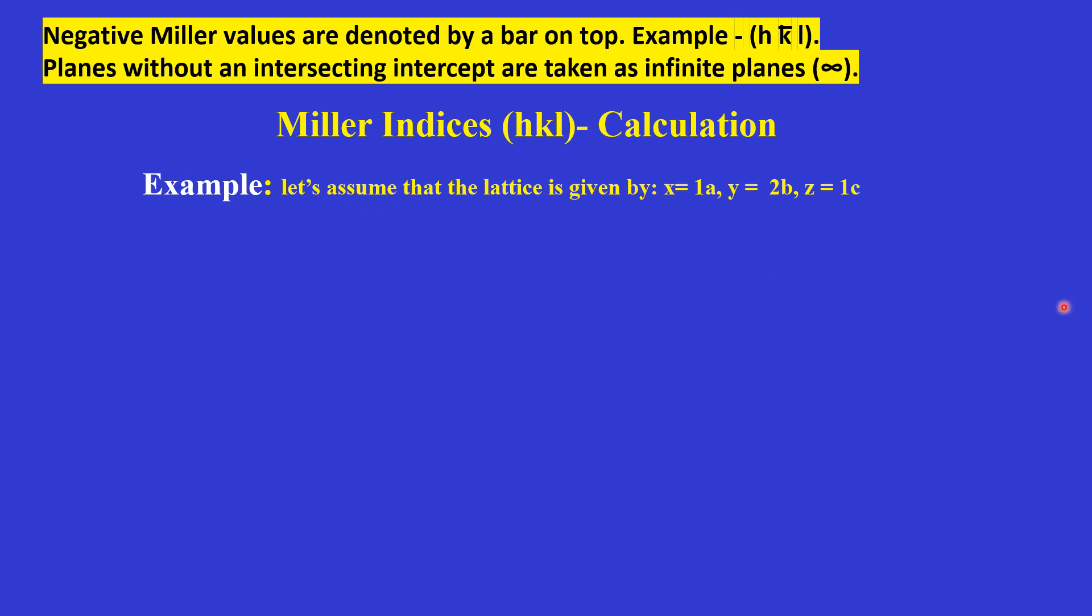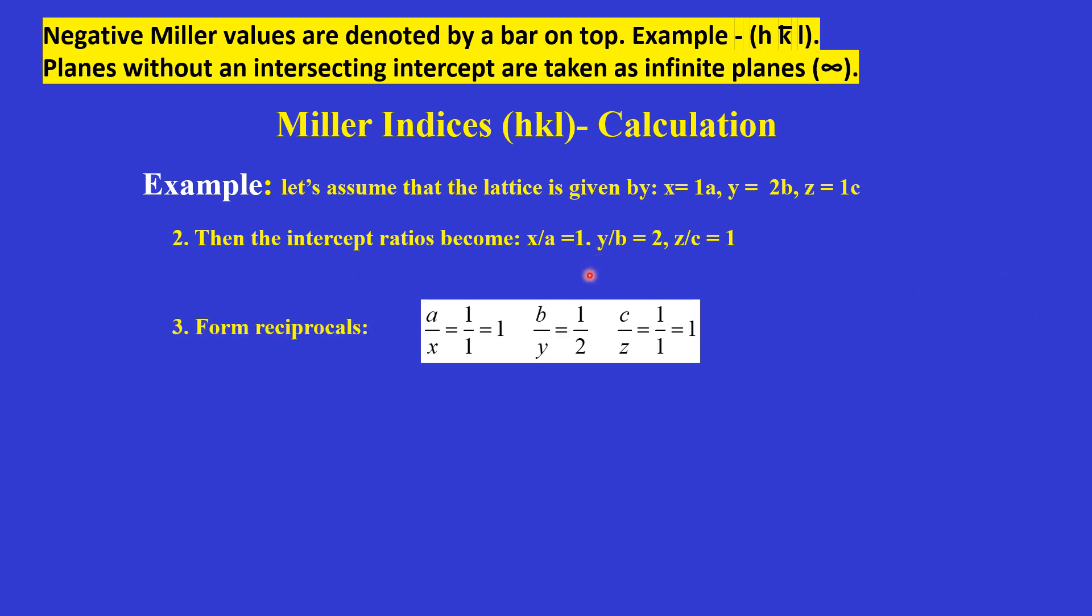Let me do an example for finding h, k, l. If on the x-axis there is 1 unit, y-axis 2 units, and z-axis 1 unit, then we take the intercept ratio 1, 2, 1.